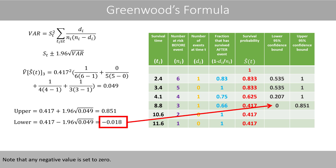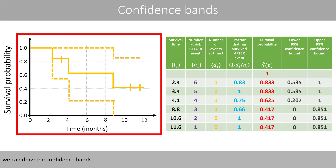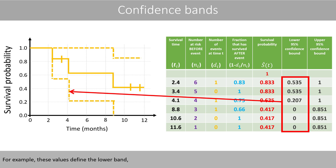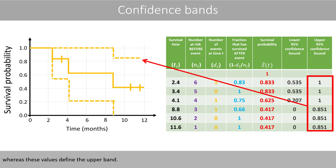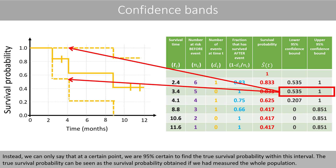Note that any negative value is set to 0. Once we have calculated the intervals, we can draw the confidence bands. For example, these values define the lower band, whereas these values define the upper band. Note that these bands should not be interpreted as being 95% sure that the entire curve is located within these bands. Instead, we can only say that at a certain time point, we are 95% certain to find the true survival probability within this interval. The true survival probability can be seen as the survival probability obtained if we had measured the whole population.